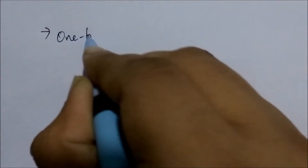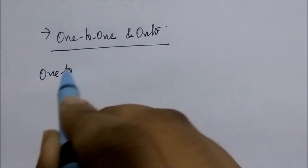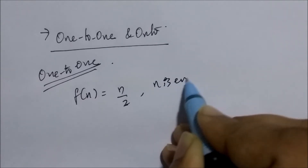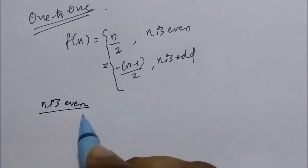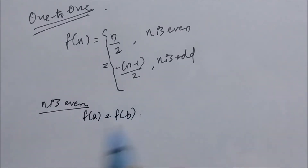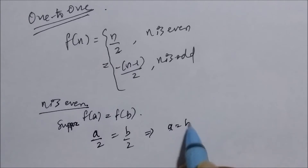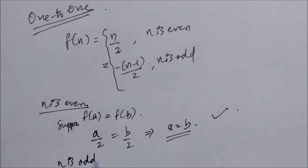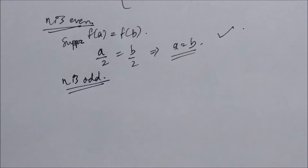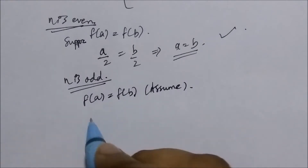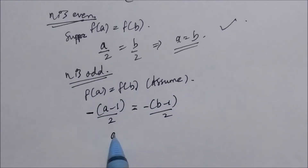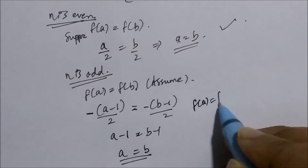To prove f is a bijection, we need to show that f is both one-to-one and onto. Let's prove that f is one-to-one. The function is: f(n) = n/2 when n is even, and f(n) = -(n-1)/2 when n is odd. Taking the case when n is even, we need to prove that f(a) = f(b) implies a = b. Suppose f(a) = f(b), which means a/2 = b/2, which implies a = b. Now taking the case when n is odd, again we assume f(a) = f(b), so -(a-1)/2 = -(b-1)/2, implying a-1 = b-1, and hence a = b. So f(a) = f(b) implies a = b in all cases, meaning the function is one-to-one.